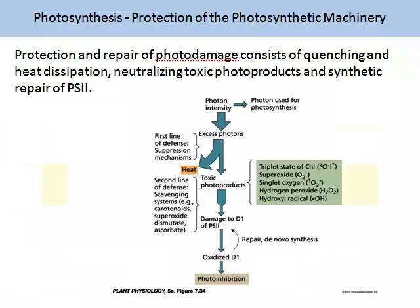We have been exploring in some detail the mechanisms of photosystem I and photosystem II, and they are extremely complicated. So what happens when they go wrong, and how does the plant avoid this? Protection and repair of photodamage consists of quenching and heat dissipation. It involves the neutralising of toxic photo-products and the synthetic repair of photosystem II subunits. This process is really important in agriculture as it reduces photosynthetic efficiencies, which can result in reductions of yield. It can also cause significant damage to the plant, and can go wrong with a lack of water, high temperatures, or very low temperatures.